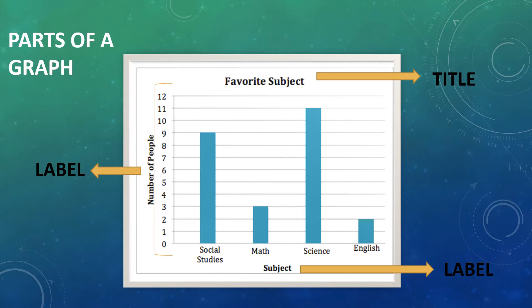The x-axis is called the horizontal axis, which is also known as the sleeping line. And the y-axis is also called the vertical axis, that is the standing line.